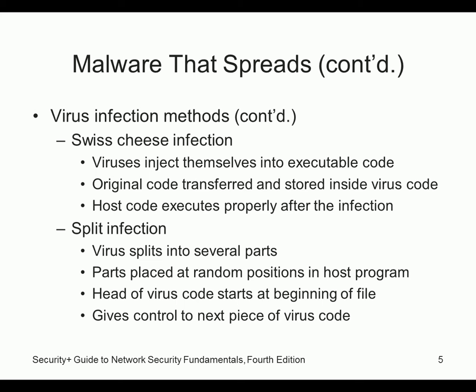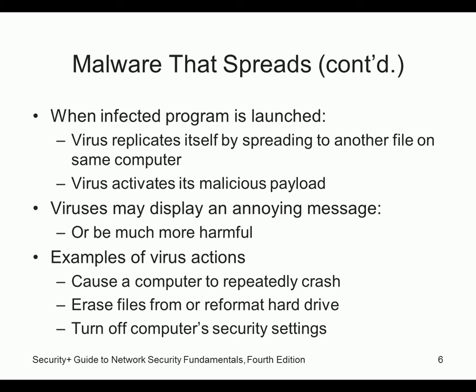There's the Swiss cheese infection — they inject themselves into executable code and the original code is transferred somewhere else. People don't see it. The virus could be split into different pieces, and could start at the beginning of the file. When launched, the virus can replicate itself by spreading to another file on the same computer or spreading to another computer.